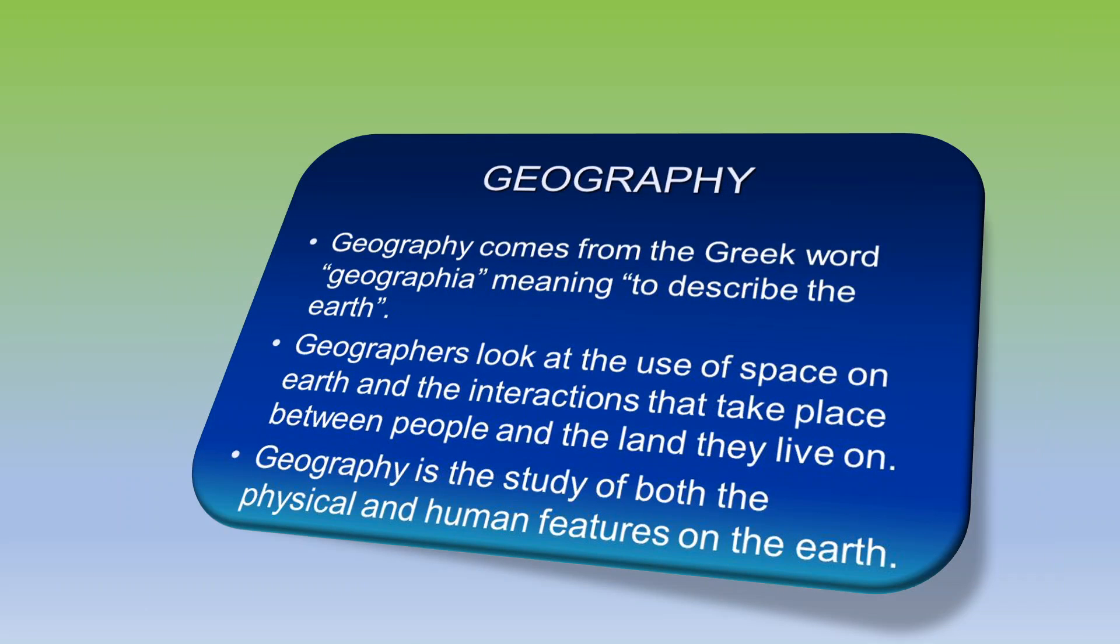Now the word geography has come from the Greek word geographia. It comes from two words, geo that is Earth and grapho that is to write. So geography is to describe the Earth. Geographers look at the use of space on Earth and interactions that take place between the people and the land they live on. Geography is the study of both physical and human features of the Earth.